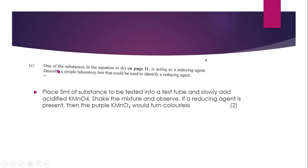Part C. One of the substances in the equation in B on page 11 is acting as a reducing agent. This statement is purely only there to confuse you. It has nothing to do with what they are asking you. Describe a simple laboratory test that can be used to identify a reducing agent. This was also given to you in the notes, so you just need to be a little bit specific to it. It's like you're giving them a very short, concise method.